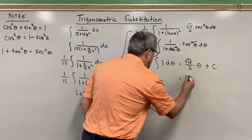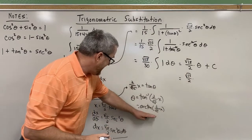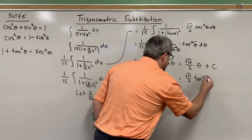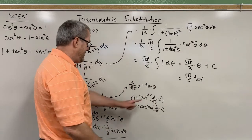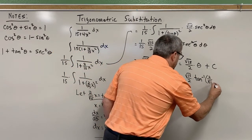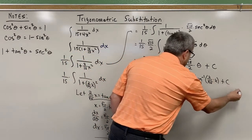So let's make that last move and then we will have it. The last move is, sorry, square root of 15 over 2. It's multiplied by theta. Arctangent or inverse tangent. I'll use the inverse notation this time. The inverse tangent of 2 over the square root of 15 times x. Don't forget your plus c.